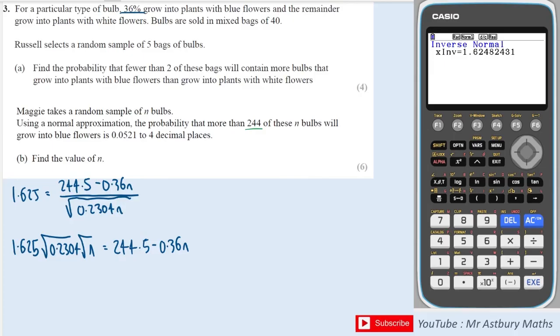I can do that calculation to simplify that left hand side. I can do 1.625 multiplied by the square root of 0.2304 and that gives me 0.78 square root n.